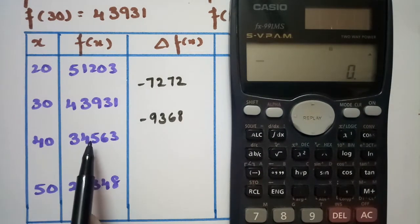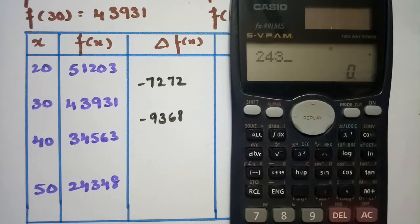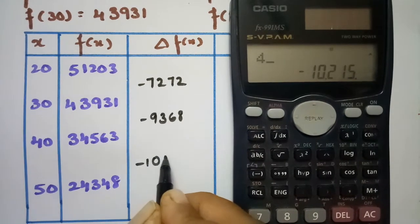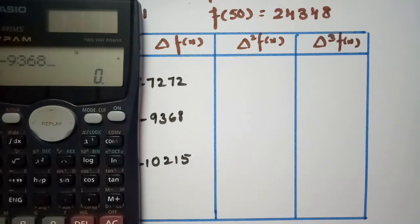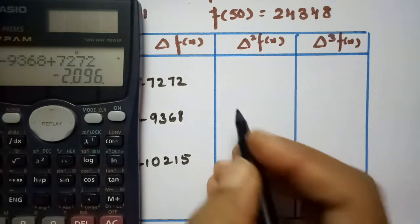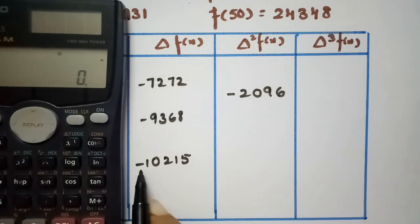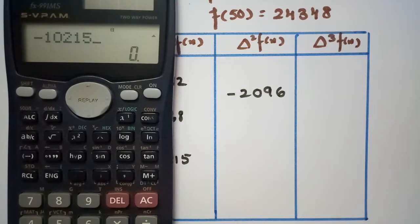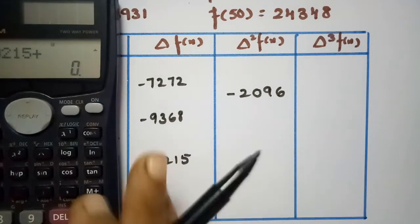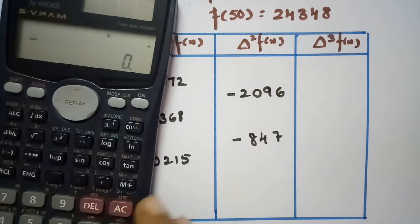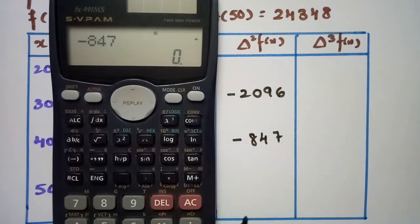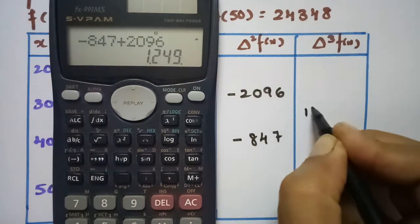For the next difference, we subtract the upper value from the lower value: 34835 minus 34563 gives -10215. The second difference table values are: -9368 minus of minus 7272 gives -2096, and -10215 minus of minus 9368 gives 9368, with the in-between value being -847. The third difference gives 1249.